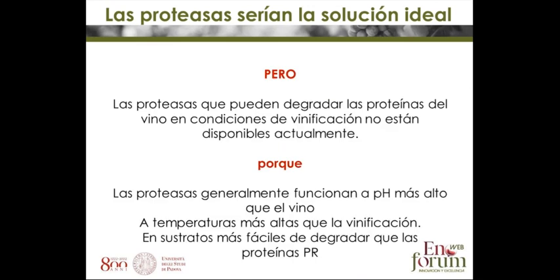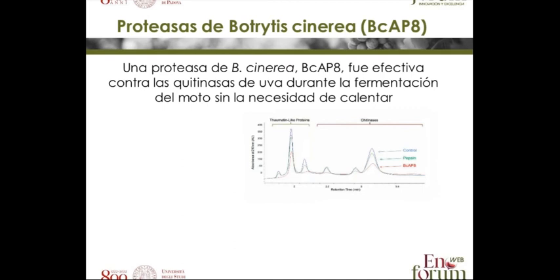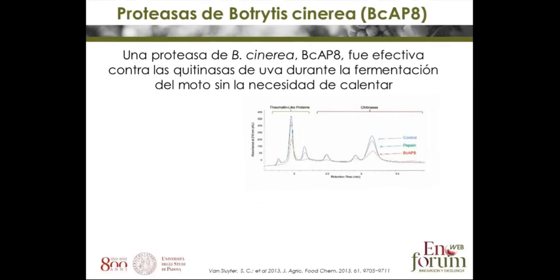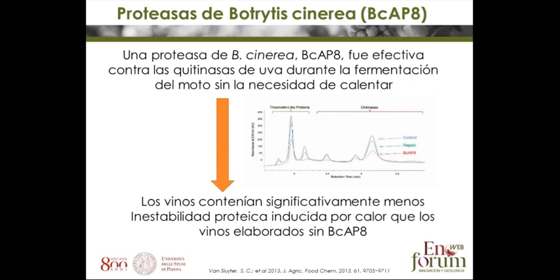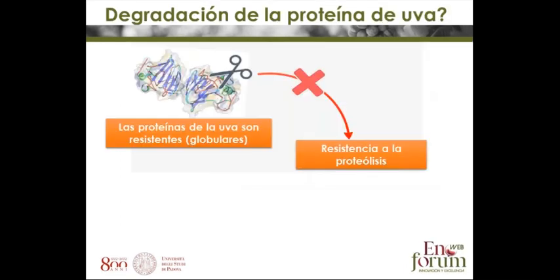Ideally, proteases would be the ideal solution. But proteases normally work well at different pH and temperatures than those present during vinification, so it is very hard to find a protease that can be added to wine and degrade the proteins. One protease from Botrytis cinerea called BCAP8 has been shown to remove chitinases. Each peak in this analysis represents a protein — when BCAP8 is added to an unstable wine, the chitinase peak goes down, demonstrating degradation. This partly stabilizes the wine, but not fully. It does work at wine temperature, so it would be the ideal solution, but it is not effective enough.